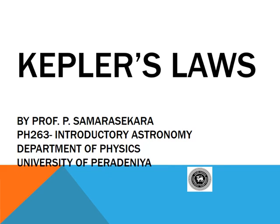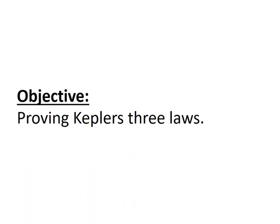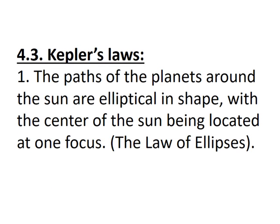In this lecture we will talk about Kepler's laws and prove all three of them. Kepler's first law states that the path of the planet around the sun is an ellipse, with the sun located at one focus of the ellipse. This is called the law of ellipses.